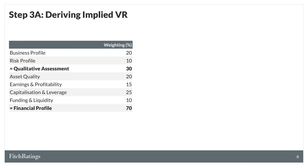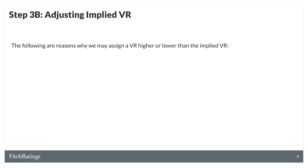The third and final main step is to determine the implied VR by combining the six scores using the weightings shown on this slide. Fitch then considers whether the implied VR should be adjusted to arrive at the final VR.